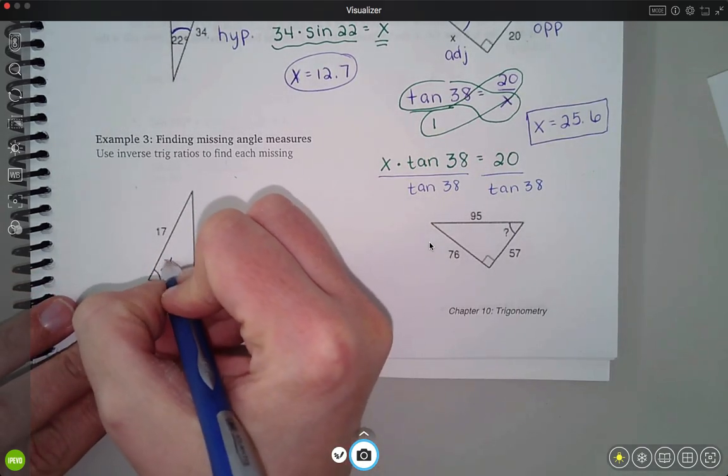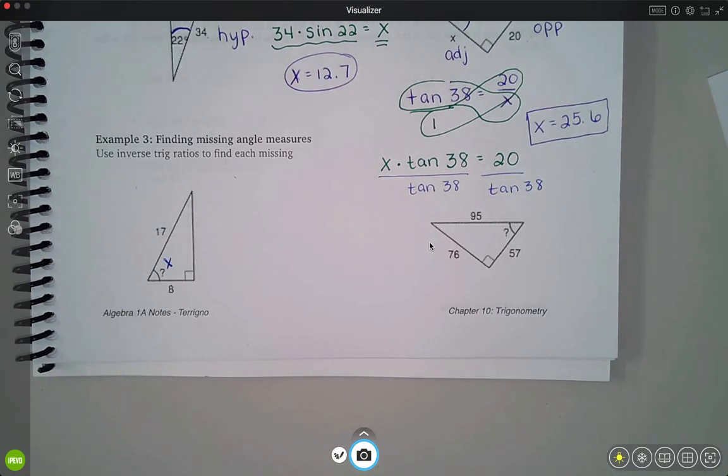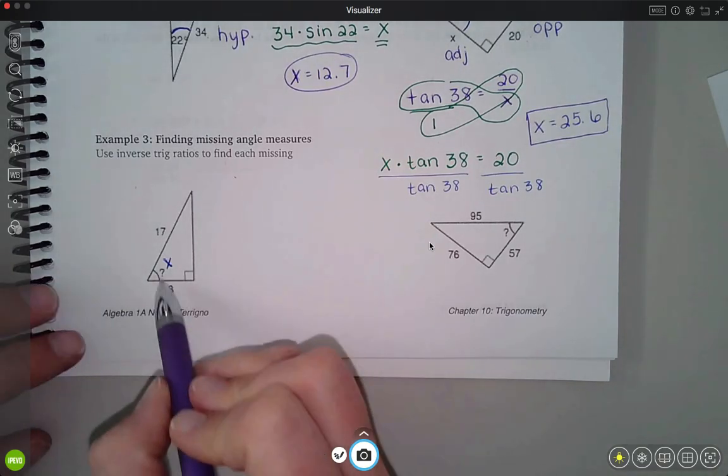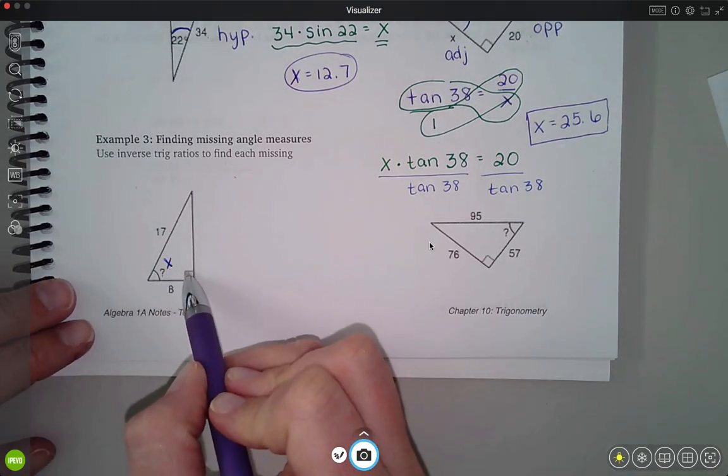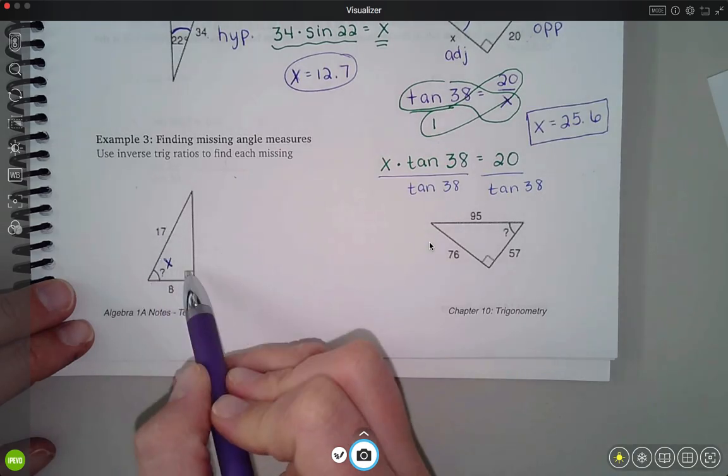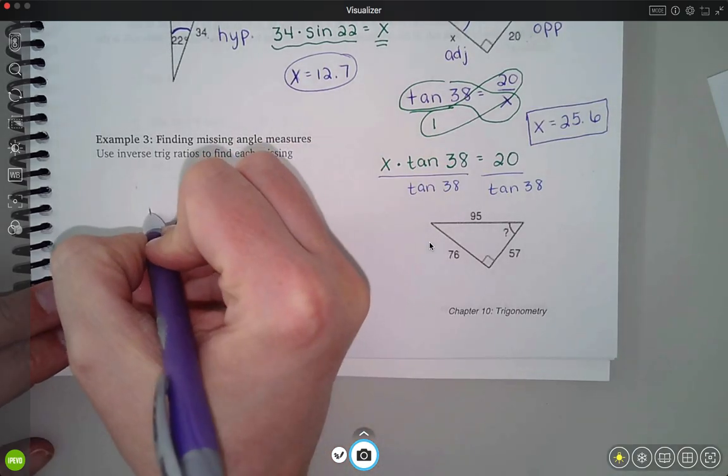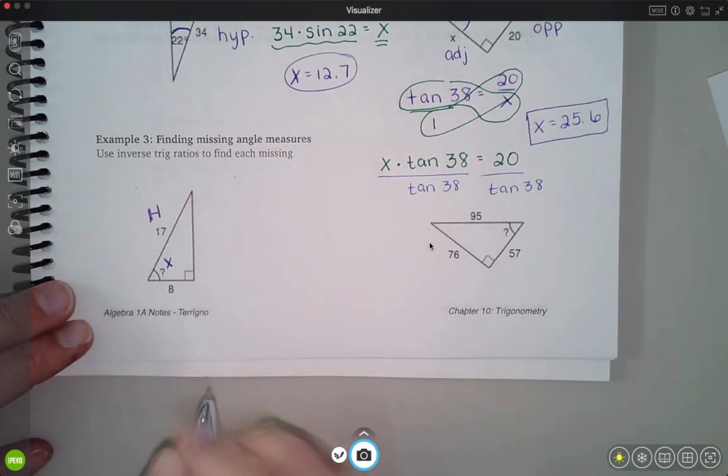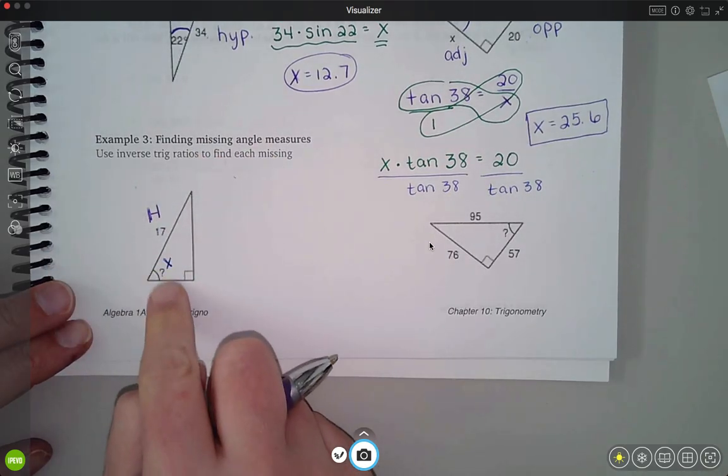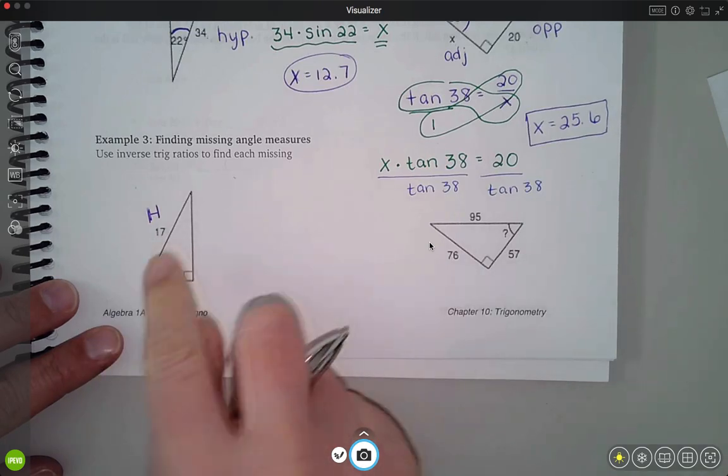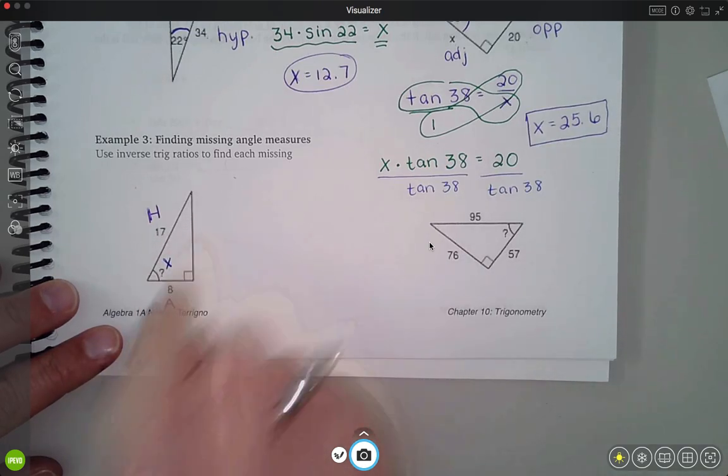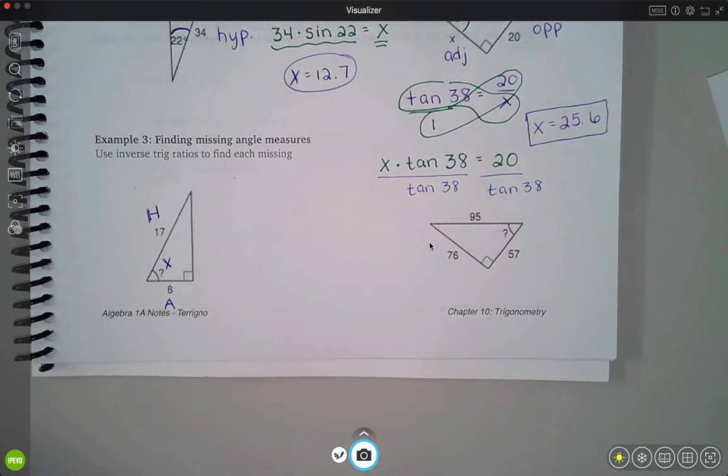Our angle is our x, and then just like before, I want to figure out which two sides am I working with. So the hypotenuse is across from the 90. The 17 is my hypotenuse, and the 8 is right next to the x, so this would be my adjacent side. This side over here would be my opposite side.